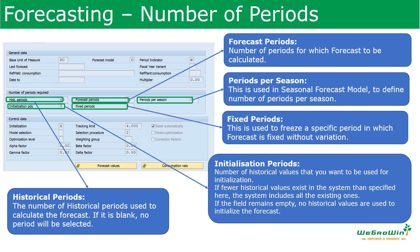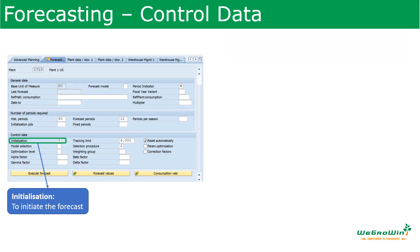The fixed period field is used to avoid fluctuation in forecast calculation, because production can no longer react to changed planning figures. We can freeze a specific period — also called a frozen period — for which the forecast is fixed without any variation. This is very important in many areas, as we cannot keep changing the forecast frequently. For example, we may decide not to change the forecast for the next one or two weeks.